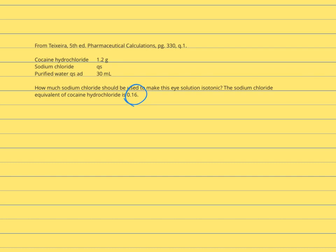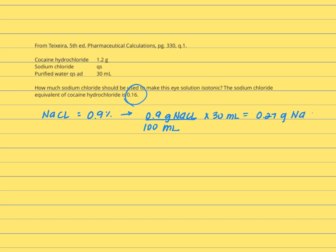The first thing that we need to do is calculate the number of grams of sodium chloride needed to make a solution isotonic based on the desired prescription volume. The concentration of sodium chloride is 0.9%, which converts to 0.9 grams of sodium chloride per 100 mLs. Using the total desired volume of 30 mLs, we determine the amount of grams in this solution is 0.27 grams of sodium chloride.